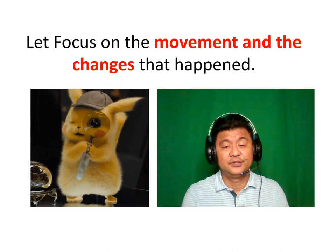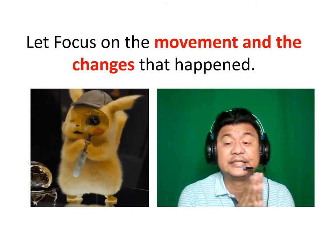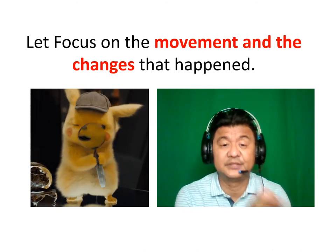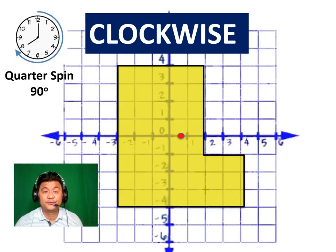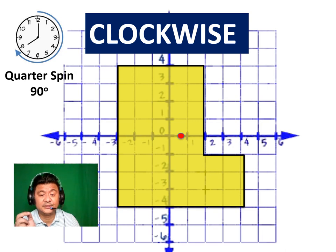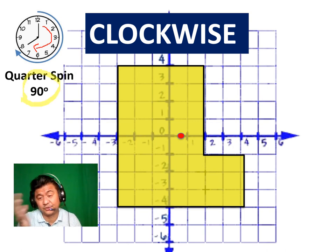On the first part, let us focus on the movement and the changes that happen every time we do a rotation. First, we're going to talk about clockwise movement. Clockwise is just like the way the hands of the clock turn. We will begin with a 90-degree spin, also called a quarter spin.